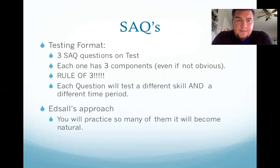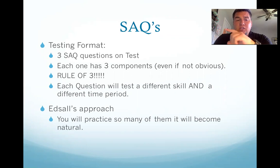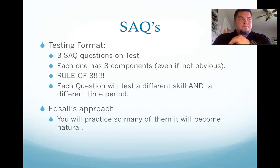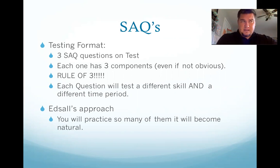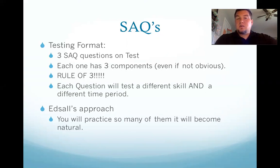So first of all, the testing format for short answer questions: there are three short answer questions on the test. There are actually four but you're going to be writing on three. Each one of the questions has three components. Sometimes it's not super obvious — it could say 'identify one similarity' and then the second bullet point will say 'identify two differences.' So it looks like there are only two questions but there are always three because there are three points per SAQ question. So that's a total of nine points for the SAQ.